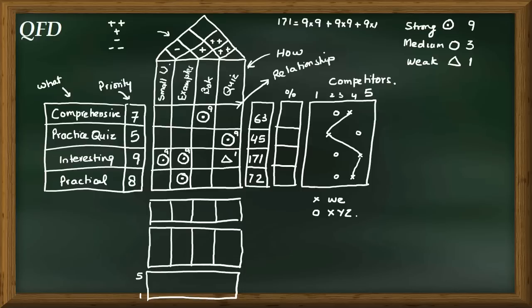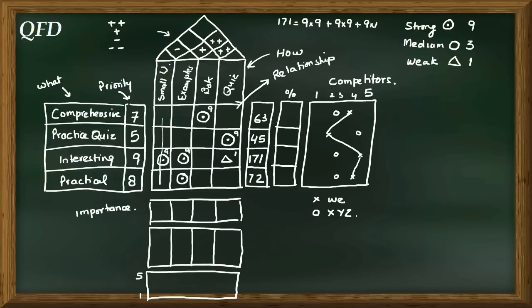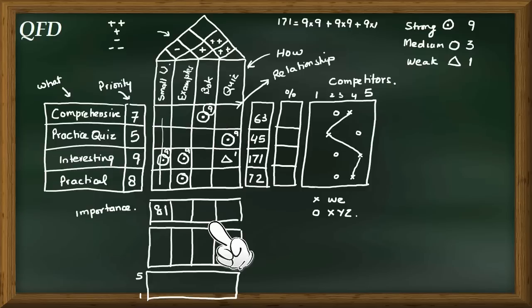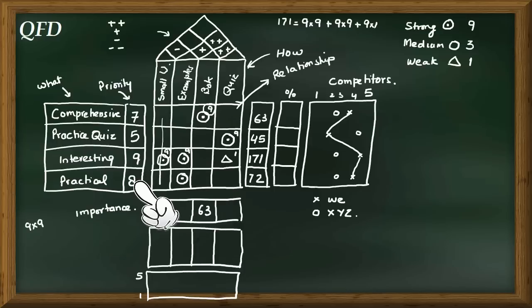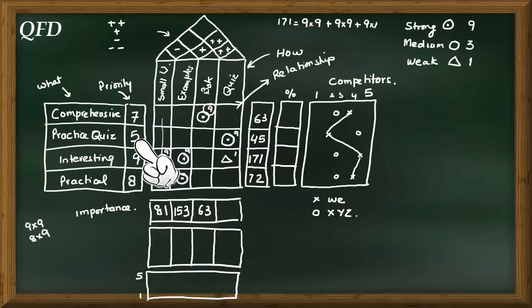At the bottom of the House of Quality we calculate importance scores for each 'How'. Each relationship value in a column is multiplied by the corresponding customer priority and then summed. For example, the examples column: 9×9 plus 9×8 equals 153. The quizzes column: 9×5 plus 9×1 equals 54. The smaller units column yields 81, and body of knowledge yields 63.